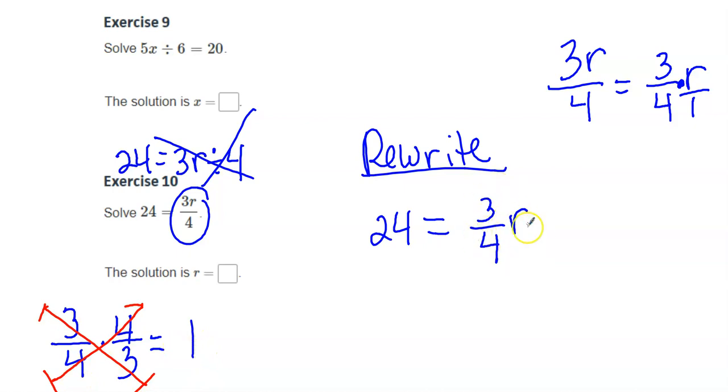So 3 fourths times 4 thirds is just 1. And that's what I want to happen on the right hand side, where you see this variable. I always look on the side with the variable, and I undo the math. So the way to undo multiplying by 3 fourths, I can just multiply by 4 thirds, the reciprocal.